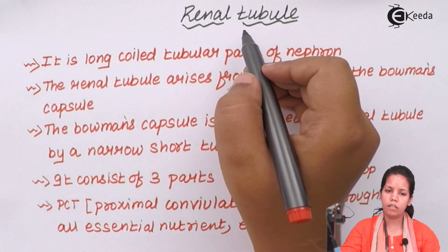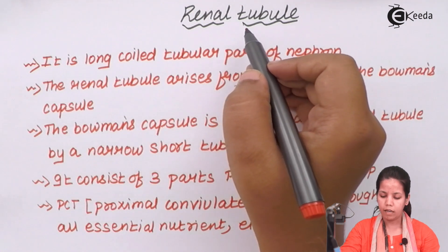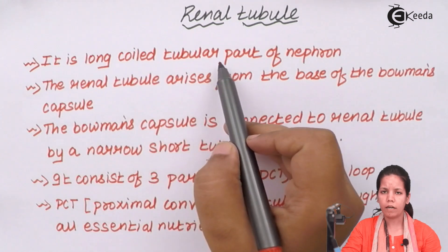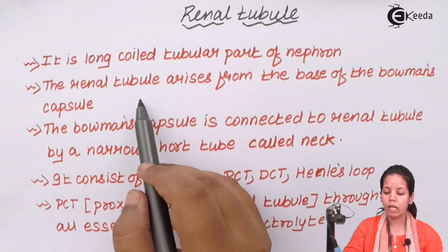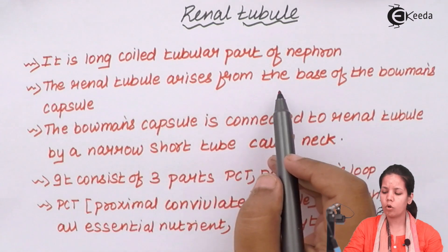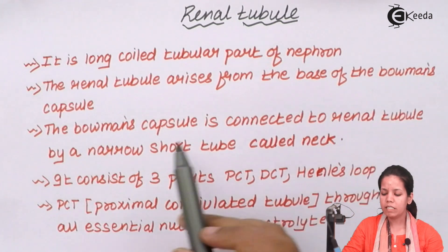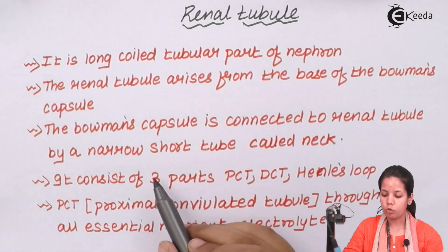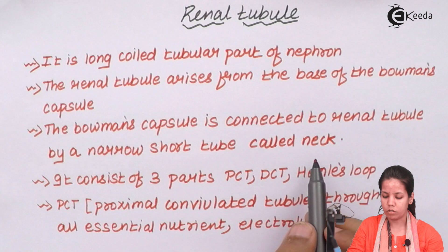Renal tubule could simply be said as a part of your kidney. It is basically a long coiled tubular part of your nephron. Your renal tubule arises from the base or the bottom of your Bowman's capsule, also called the malpighian corpuscle. Your Bowman's capsule is connected to the renal tubule by a narrow short tube which is called the neck part or the neck region.